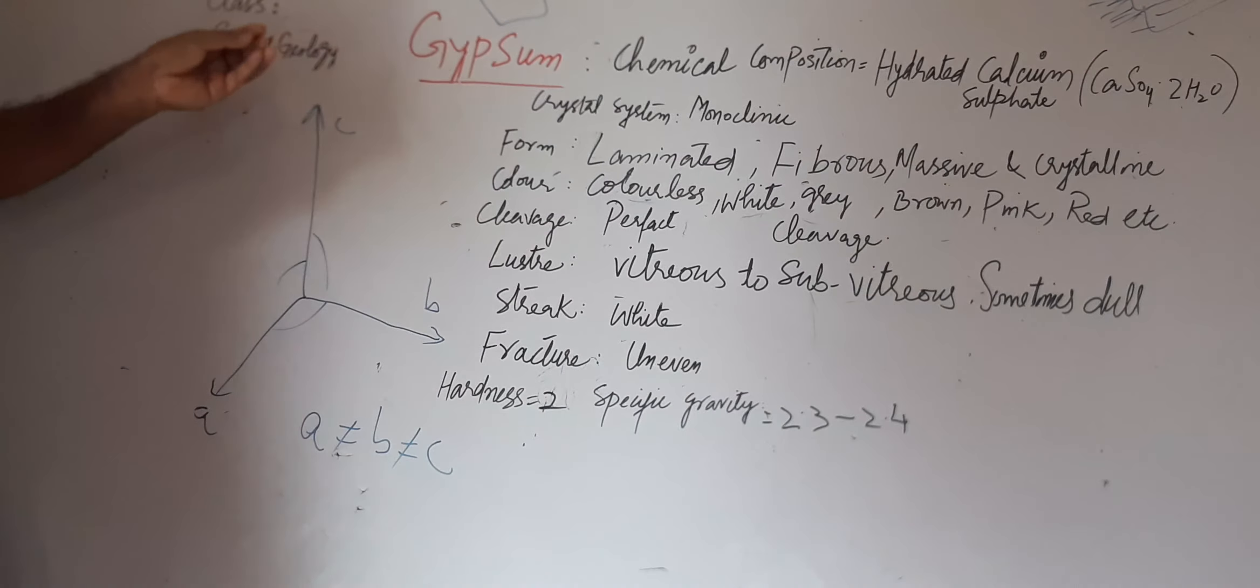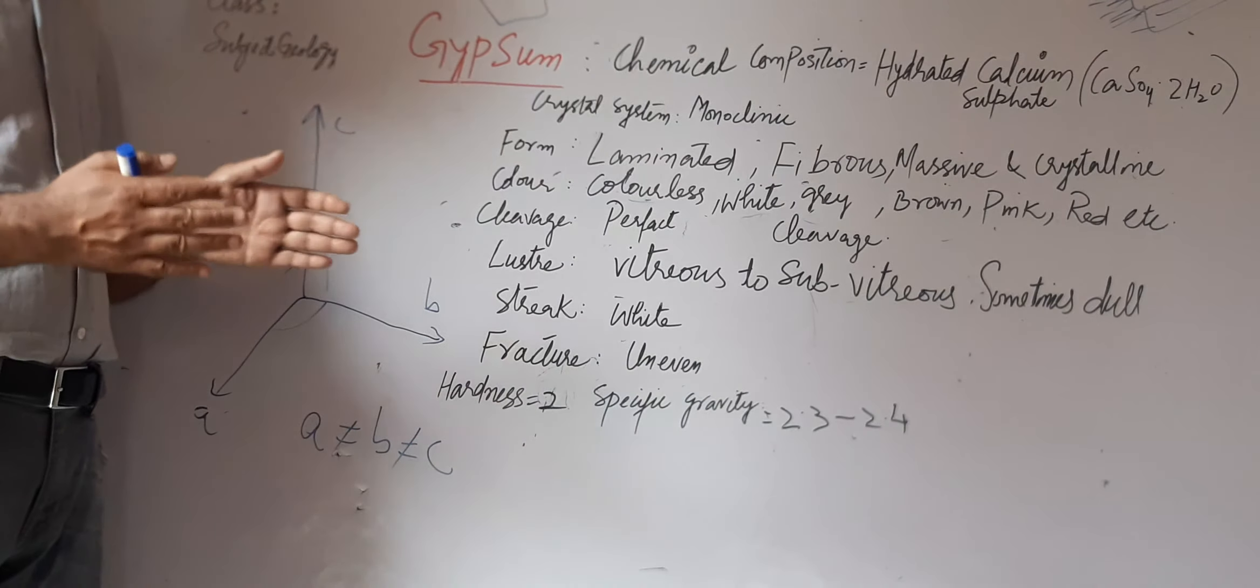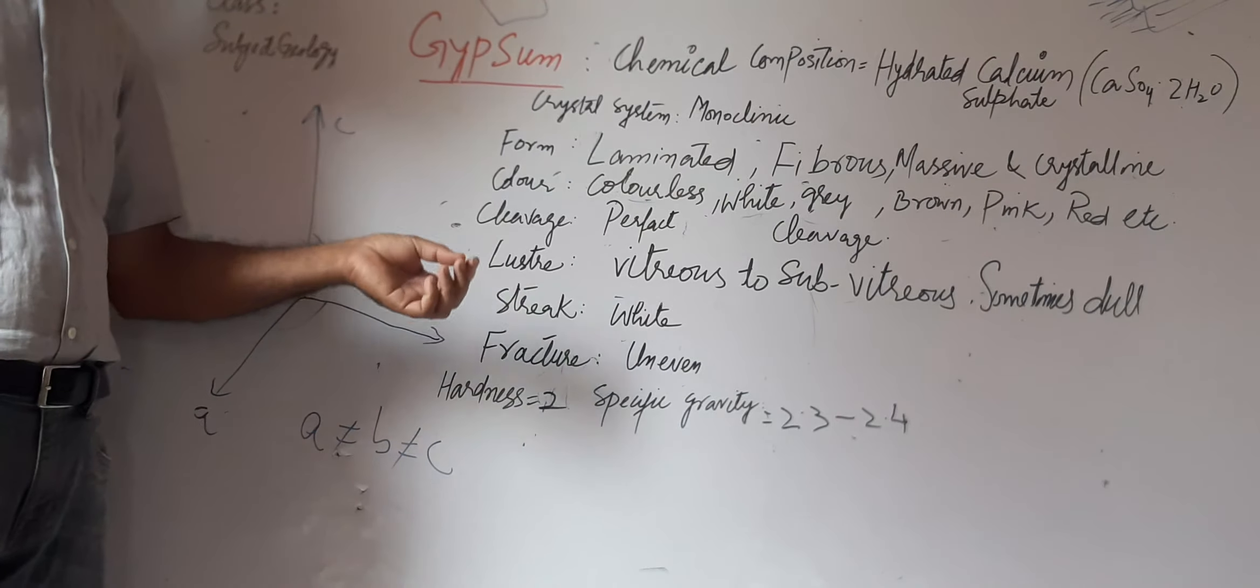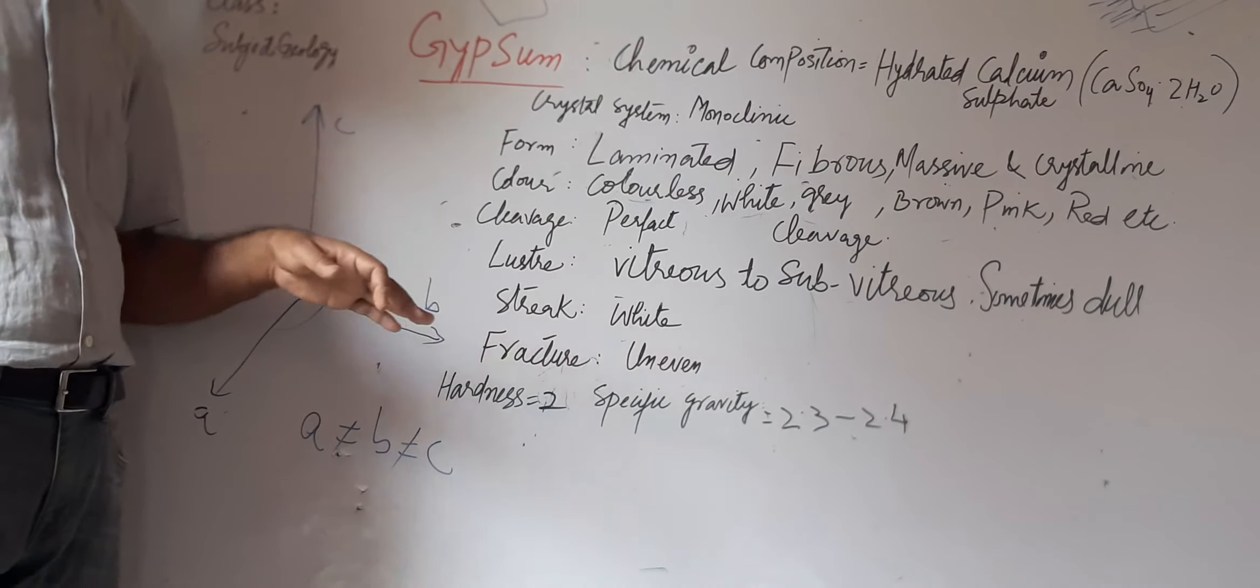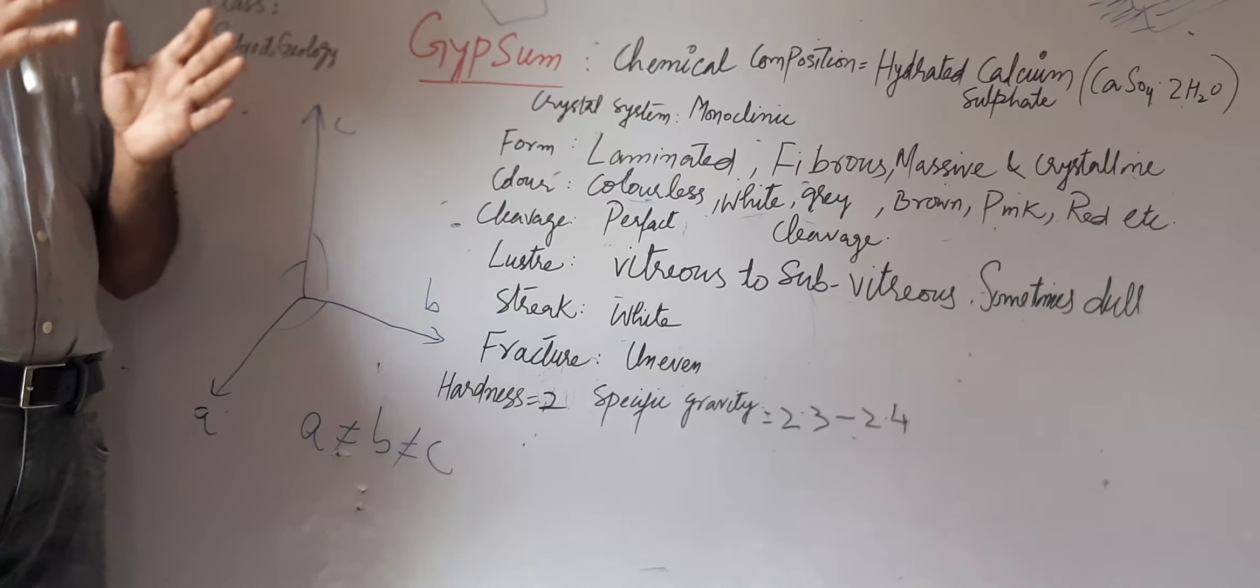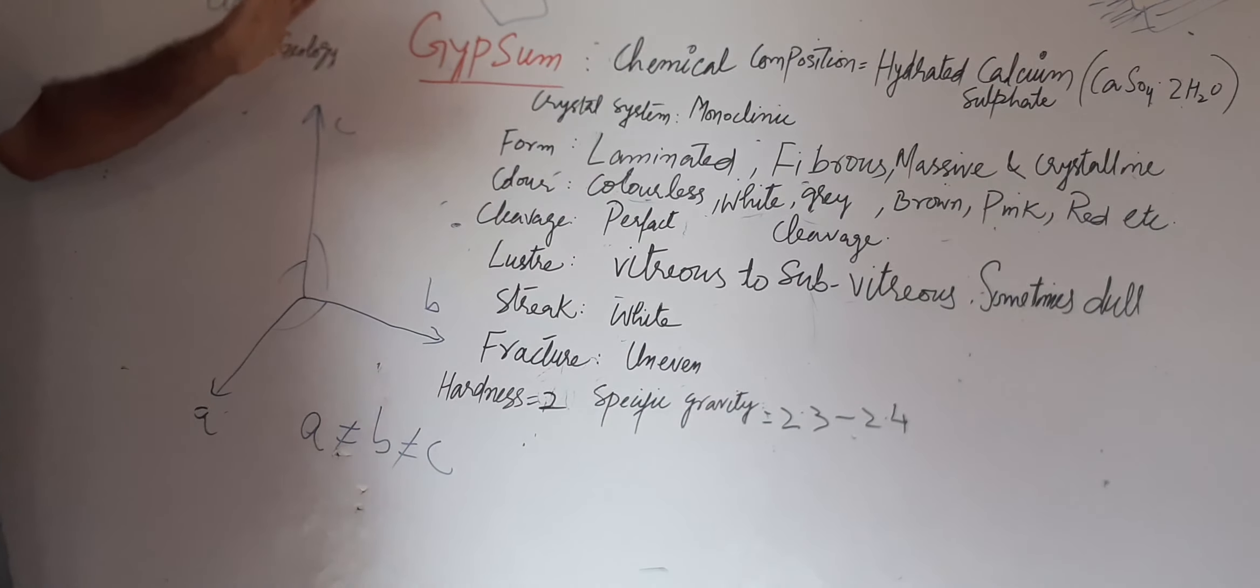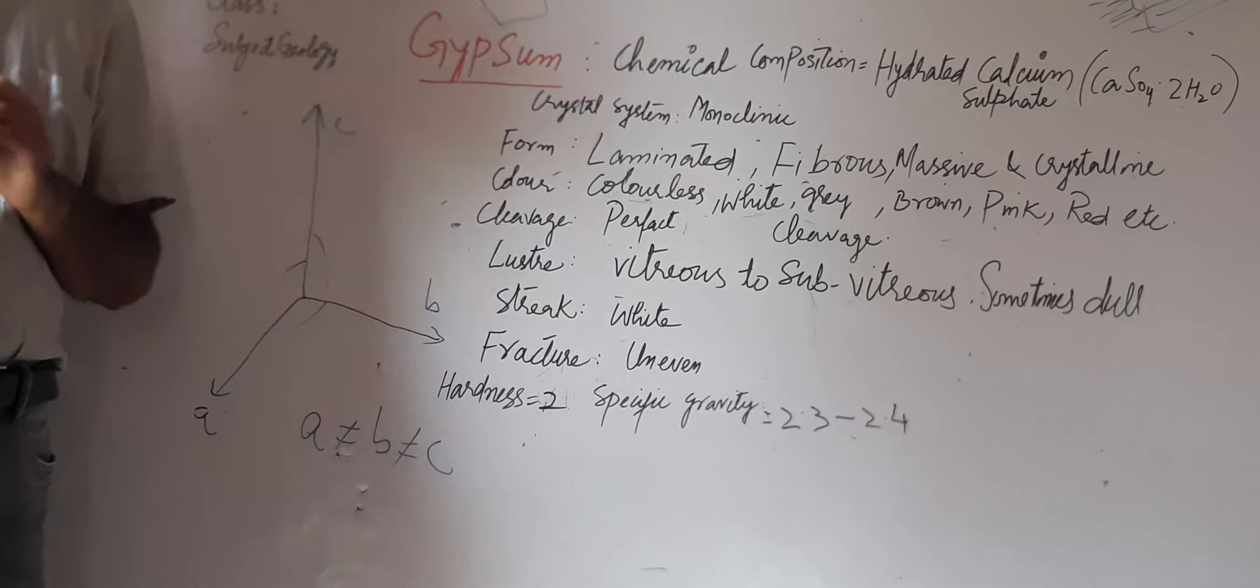This is a range of hardness and some properties like fracture (uneven), perfect cleavage. When two or three things are the same as the hardness, we can identify minerals using these properties.